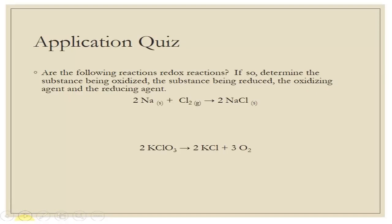Let's look at some examples: are these redox reactions, and if so, what's being oxidized, what's being reduced, what's the oxidizing agent, what's the reducing agent? First, let's identify by main category. Sodium reacts with chlorine to produce sodium chloride — two things on the left, one on the right, so this is synthesis. There's no acid, so it can't be acid-base. There's no gas, so it can't be gas-evolving. It's not precipitation. So let's find out if it's redox.